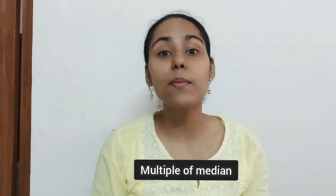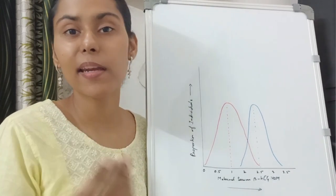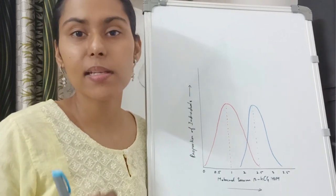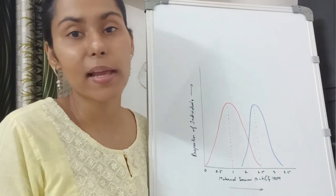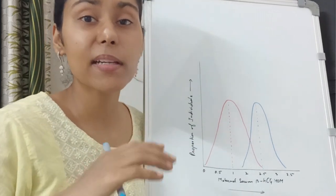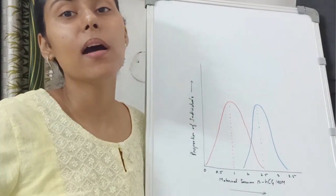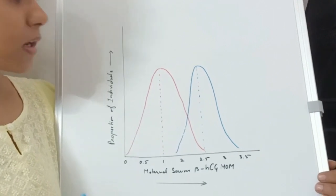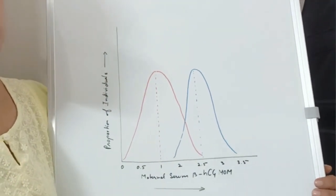These international units need to be converted to MOMs (multiples of medians). MOMs indicate how far an individual value varies from the median range. The serum beta-HCG and PAPP-A levels vary depending on maternal age, maternal weight, gestational age, ethnicity, and the type of assay used. Converting to MOMs allows us to standardize for these individual factors and compare values across individuals. On the graph shown, the vertical axis represents the proportion of individuals and the horizontal axis shows maternal serum beta-HCG level in MOMs.